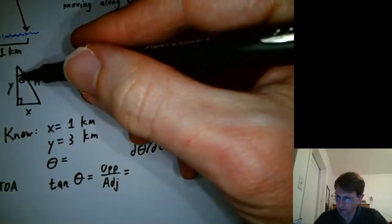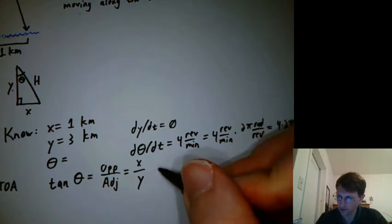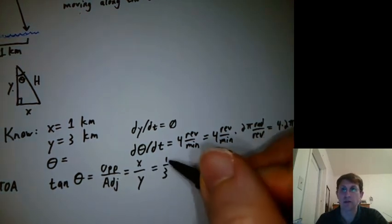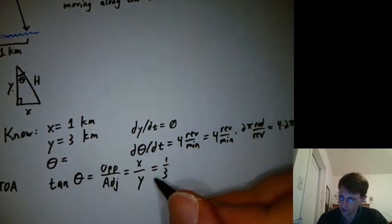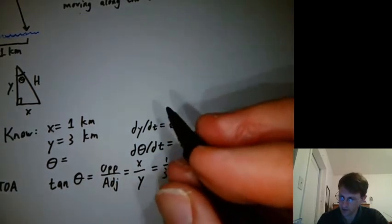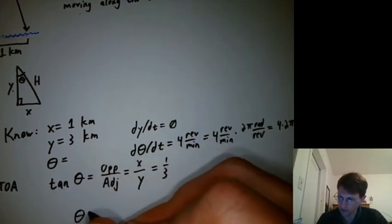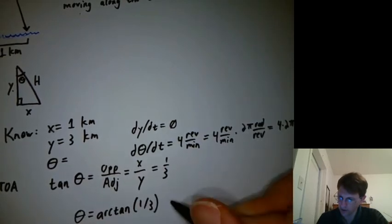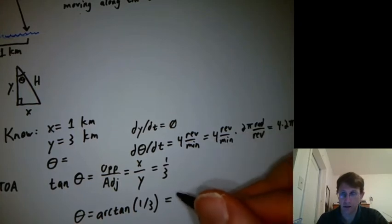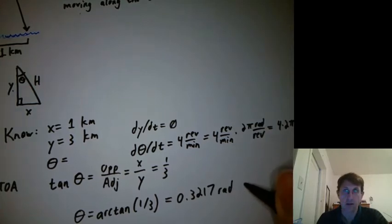And opposite theta here is x and adjacent to theta is y. So right now that's one kilometer and three kilometers. And then how will we get theta itself? Well, we could take the arc tan of all that stuff. So the arc tan of tan just gives us theta. And arc tan of one third. And if you actually type that in somewhere, you get 0.3217 radians. If you like it in degrees, it's about 18 degrees.